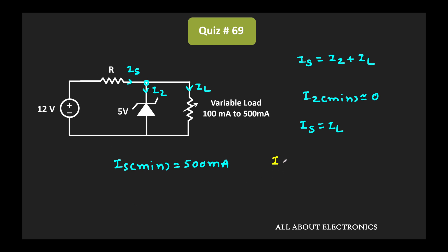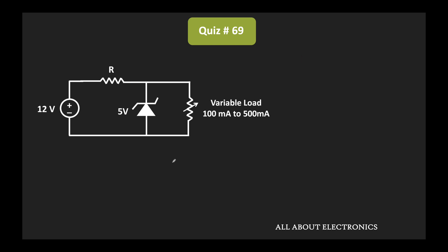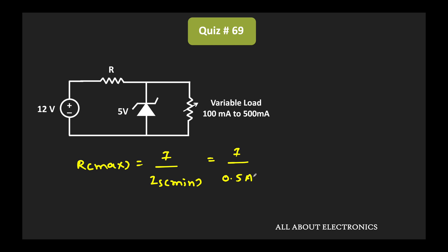This current Is is equal to 12V minus 5V divided by R, which is equal to 7 divided by R. From this, we can say that the maximum value of R — R maximum — is equal to 7 divided by Is minimum, that is equal to 7 divided by 0.5 ampere, or 500 mA. That means the maximum allowed value of R is equal to 14 ohm.